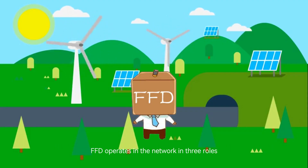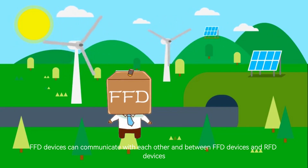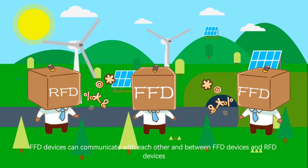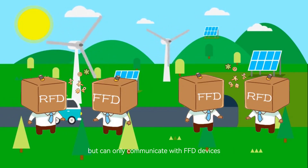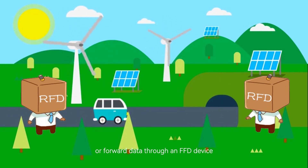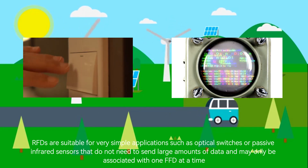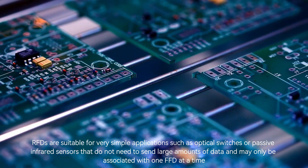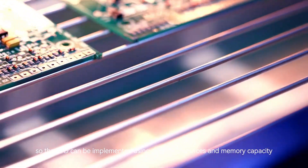FFD operates in the network in three roles: PAN coordinator, coordinator, and device. FFD devices can communicate with each other and with RFD devices. RFD devices cannot communicate directly with each other, but can only communicate with FFD devices or forward data through an FFD device. RFDs are suitable for very simple applications such as optical switches or passive infrared sensors that do not need to send large amounts of data, and may only be associated with one FFD at a time, so the RFD can be implemented using minimal resources and memory capacity.